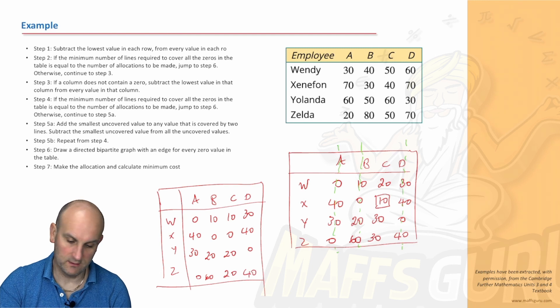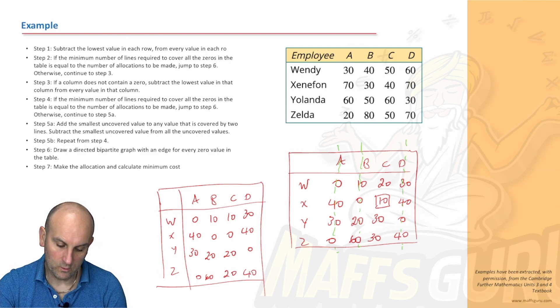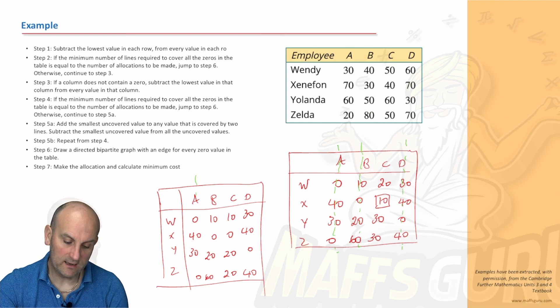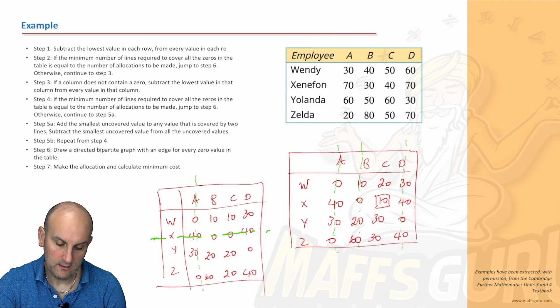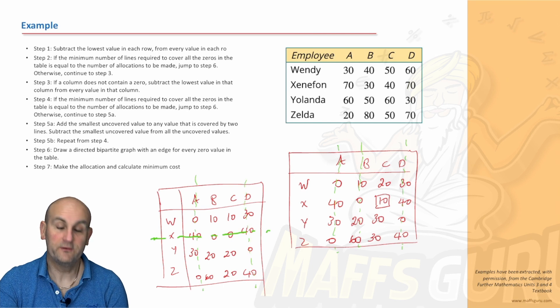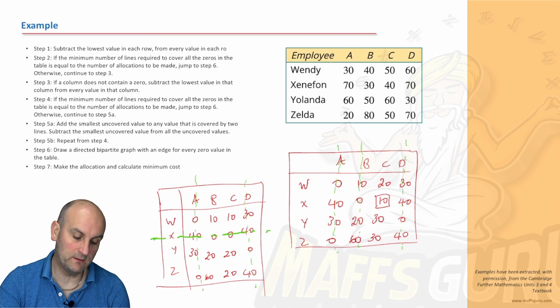What does it say? Step 4. If the minimum number of lines required to cover. So we do that again. So I've got 1, 2, 3, 4, 1, 2, 3. So again, my minimum actually is 1 through here, 1 through there, and 1 through there. So again, that's three lines. Is the minimum number of lines required to cover all the zeros in the table equal to the number of allocations it isn't?